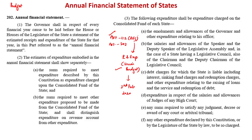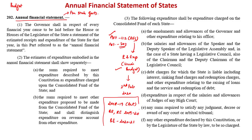Article 202 is the statement of estimated receipts and expenditure of a particular state government for a particular financial year. Looking at the recently tabled union budget, you can see actual numbers for 2018-19, budgeted and revised estimates for 2019-20, and budgeted estimates for 2020-21. Article 202 states that the governor of a state shall cause the annual financial statement to be laid before the house or houses of the state legislature.